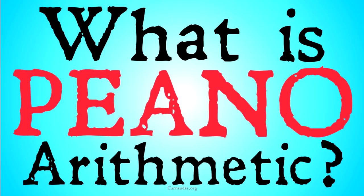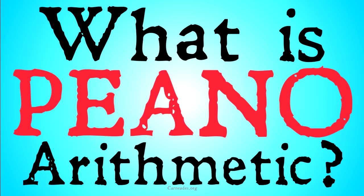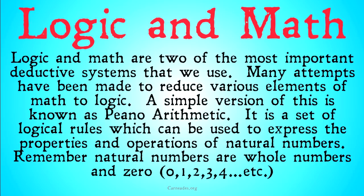As we move deeper into our study of truth, we are going to need formal languages to work with. These formal languages may need to be a little bit more expressive than languages we've worked with before. So as we move towards our axiomatic theories of truth, we are going to need to have a bit of an understanding of what Pinot Arithmetic is. Logic and math are two of the most important deductive systems that we use. Because they're so similar, many attempts have been made to reduce various elements of math to logic. A simple version of this is known as Pinot Arithmetic — it is a set of logical rules which can be used to express the properties and operations of natural numbers.